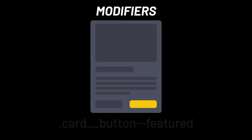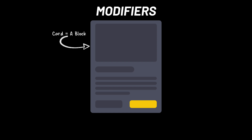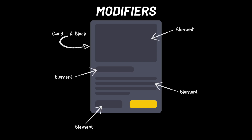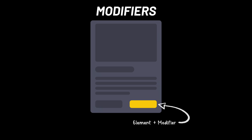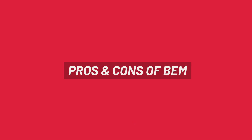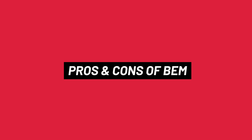So let's take a look at how BEM looks in the card example. The card is a block. The image, title, excerpt, and buttons are elements of the card. The featured button is a button element with a modifier that makes it unique. Now we've seen this, let's take a look at some of the pros and cons of BEM naming.